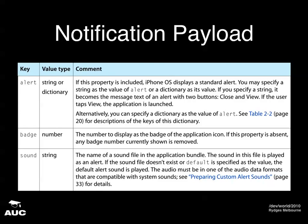Here is the payload — it's a dictionary in JSON format. There are three simple keys: first, alert — in the simple case that can be a string, like 'it's your turn in Words with Friends.' Then badge, which is an integer for the little badge you can put on the app — unread message counts, that kind of thing. And sound — you're not downloading a sound file, you're sending a string that matches the name of a sound file already in your application. The alert can also be a dictionary with more advanced options.